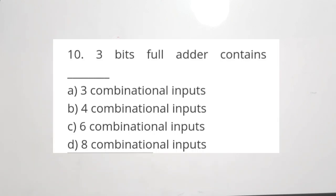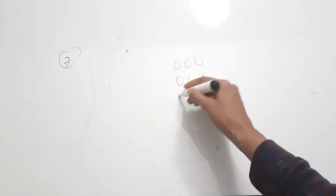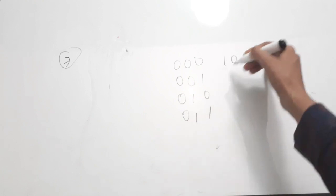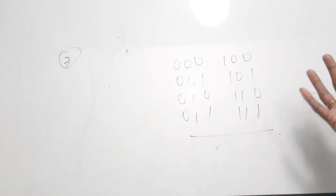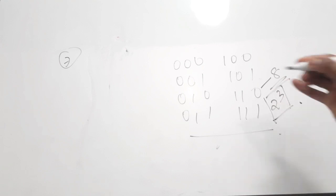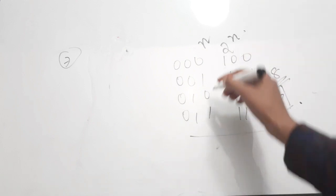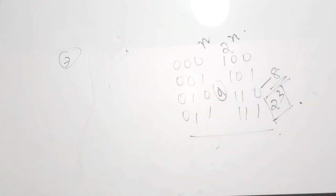The seventh question is from adders: a 3-bit full adder contains how many combinational inputs? The combinations are 000, 001, 010, 011, 100, 101, 110, 111 — that is 2³ = 8 combinations. For an N-bit adder, it can have 2^N combinations as a general rule. The correct answer is option D — eight combinational inputs.